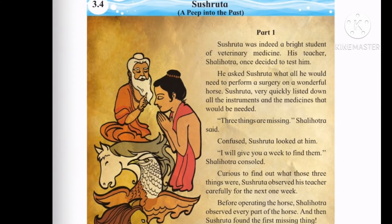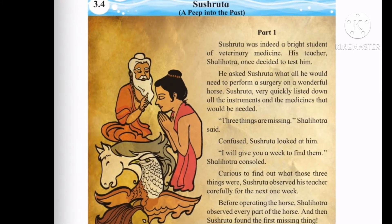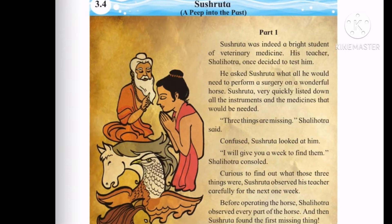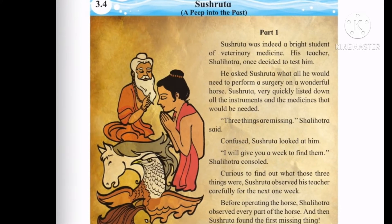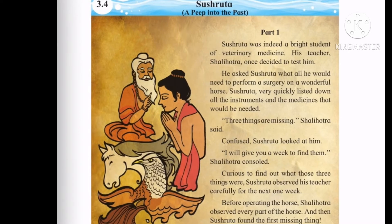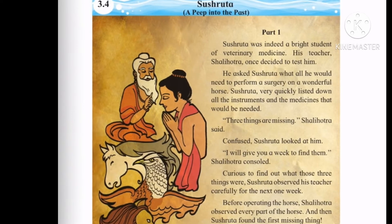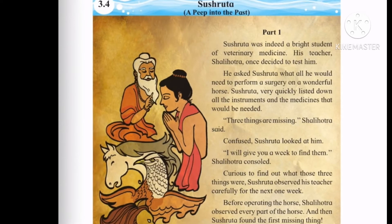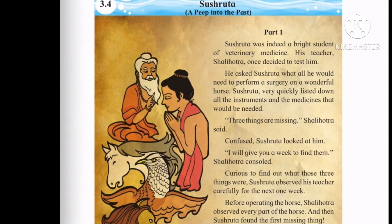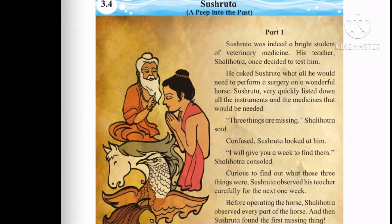Shalihotra said, "Three things are missing." Confused, Sushruta looked at him. "I will give you a week to find them," Shalihotra consoled. Curious to find out what those three things were, Sushruta observed his teacher carefully for the next one week.